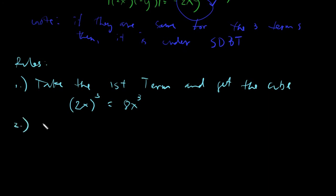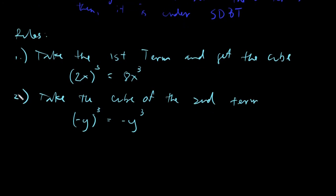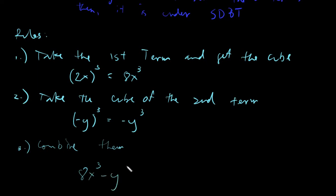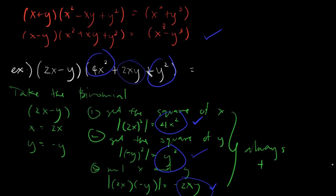Rule 3 — just simply combine them. You will have 8x³. Since the second term is negative, it would be minus y³. This would be your final answer. So let's write it down: 8x³ − y³.